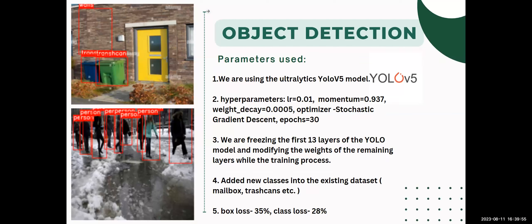For object detection, we used the Ultralytics YOLO V5 model with hyperparameters of learning rate of 0.01, momentum of 0.937, weight decay of 0.035, and the Stochastic Gradient Descent Optimizer as well as 30 epochs. We froze the first 13 layers of the YOLO model and modified the weights of the remaining layers during training. We also added new classes like mailboxes and trash cans and had a box loss of 35% and class loss of 28%.